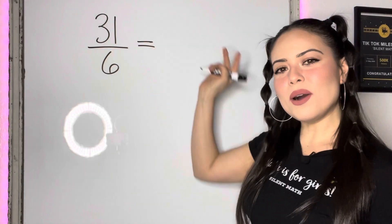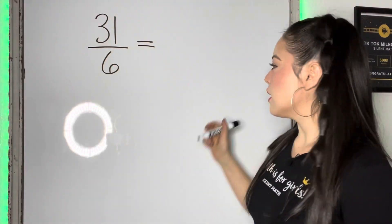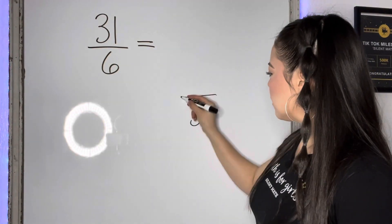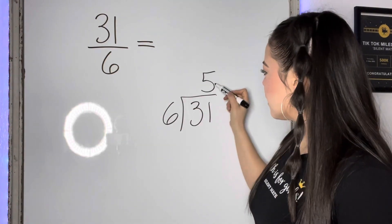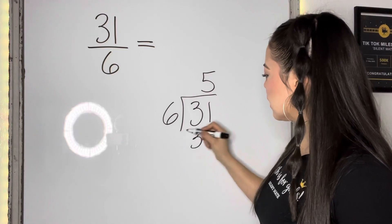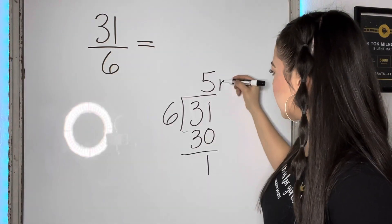Example four, 31 sixths. So let's divide. 31 divided by six. Six goes into 31 five times. And then five times six is 30. The difference is one. So our remainder is one.